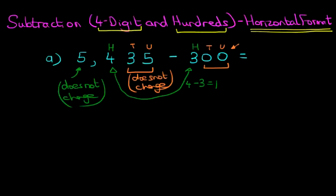So therefore, 5,435 minus 300 is 5,135. The only digit which has changed is the 1. That's the hundreds.